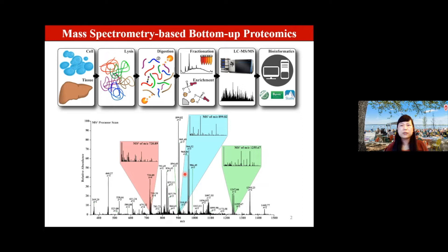You've heard a lot over these two days about different data acquisition and data analysis. Depending on your sample of interest, you can start with cell culture or a piece of tissue. You can lyse cells, extract proteins, and then use different enzymes such as trypsin or Glu-C. You let your favorite enzyme digest them into pieces, followed by fractionation. If you're interested in a particular PTM, you can use IMAC to enrich phosphopeptides or lectin to enrich glycoproteins, followed by nanoflow LC-MS/MS.